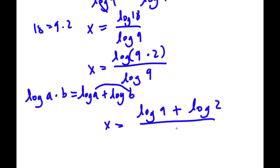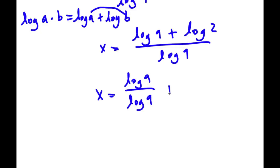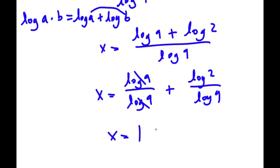So now I have log 9 plus log 2 divided by log 9. This is the same thing as log 9 over log 9 plus log 2 over log 9. I simply divided this into two parts. Now log 9 over log 9 — these two cancel out — so this is the same thing as 1. So I have 1 plus log 2 over log 9.